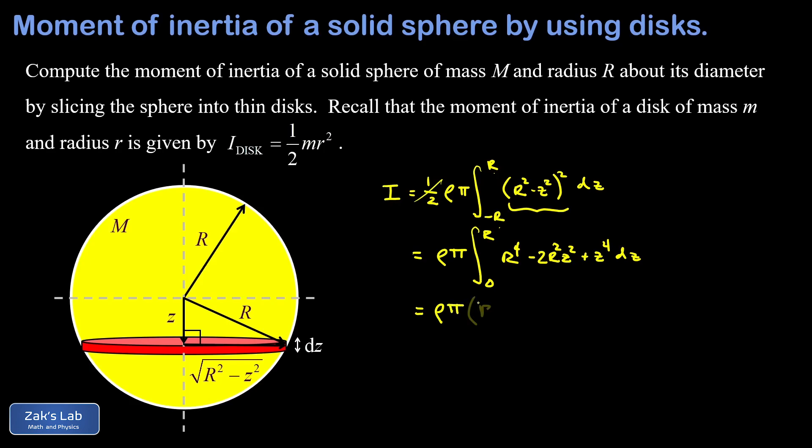And I have rho pi times r to the fourth z. Remember here that r to the fourth is a constant with respect to the integration variable. So I just end up tacking on a factor of z. In my second term, I'm integrating the z squared which integrates to one third z cubed. So I end up with negative two thirds r squared z cubed. And then in my third term I end up with a one fifth z to the fifth.